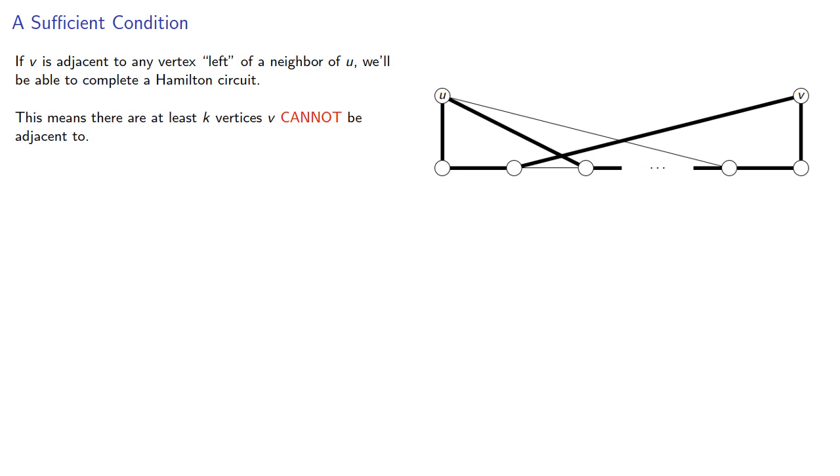So the degree of v is at most n minus 1 minus k. And so the degree of u plus the degree of v is less than or equal to n minus 1. And this proves our theorem.